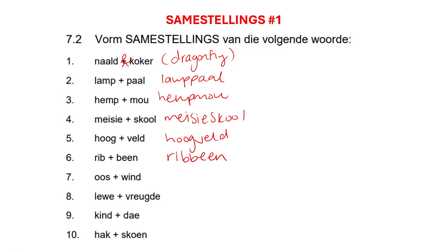'Oos' and 'wind' — this is the one that you have to remember. Anything with a direction will get an 's' at the end. So it will be 'oosterwind', 'westerwind', 'suidewind' — so 'suide' will be 'suide'.